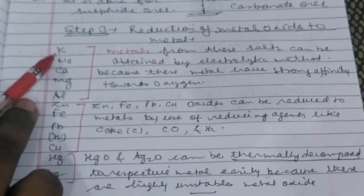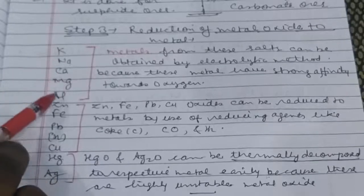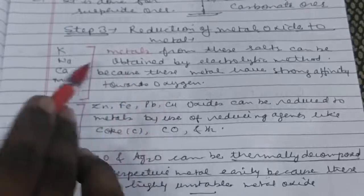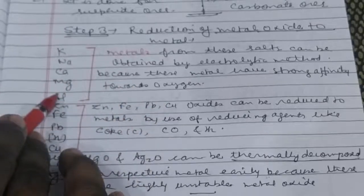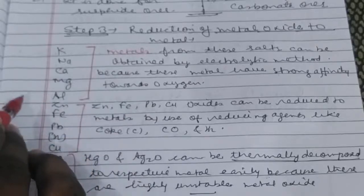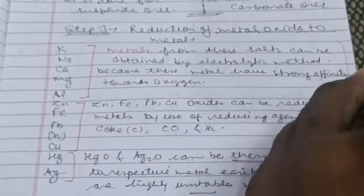Top 5 metals - potassium, sodium, calcium, magnesium, aluminium - have strong affinity towards oxygen. Therefore, if you have to reduce this oxide to metal, you will use process of electrolysis. This is the most important reason.